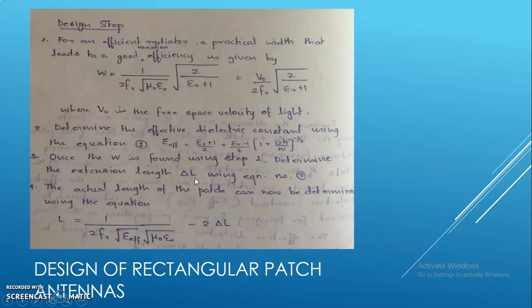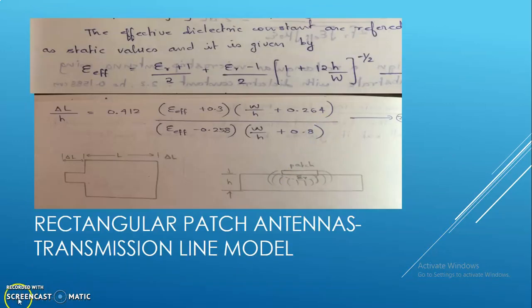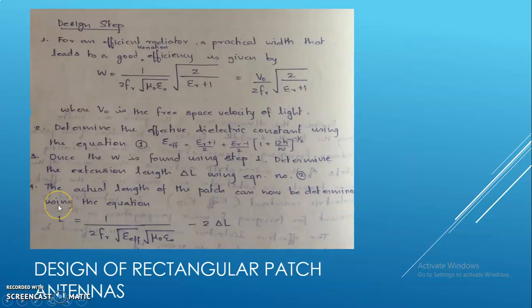Step 4: The actual length of the patch antenna can now be determined using the equation L equals 1 by (f_r times square root of epsilon_effective times mu_0 epsilon_0) minus 2 delta_l. Therefore, this is how we design the rectangular patch antenna using these steps: 1, 2, 3, 4.